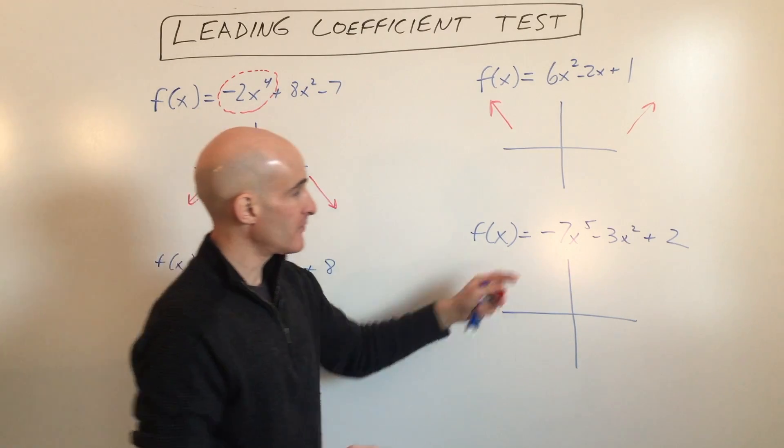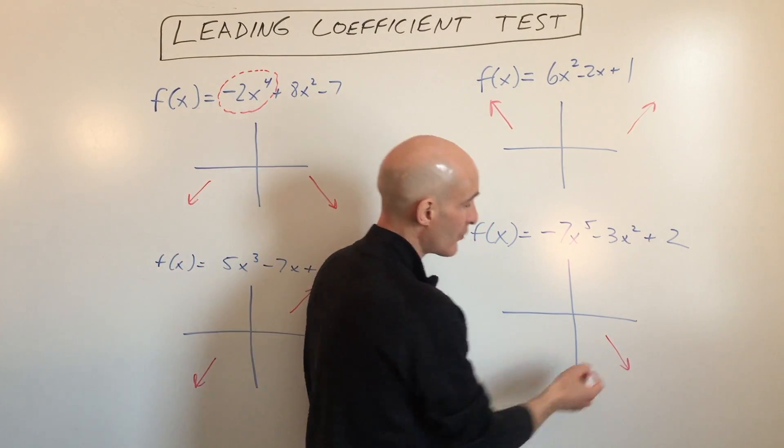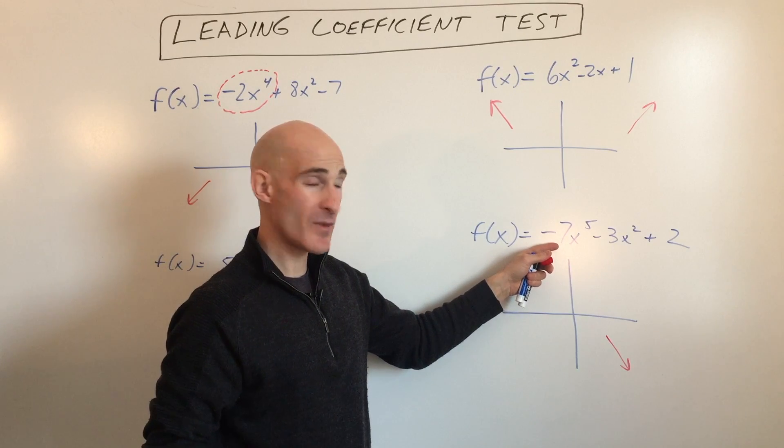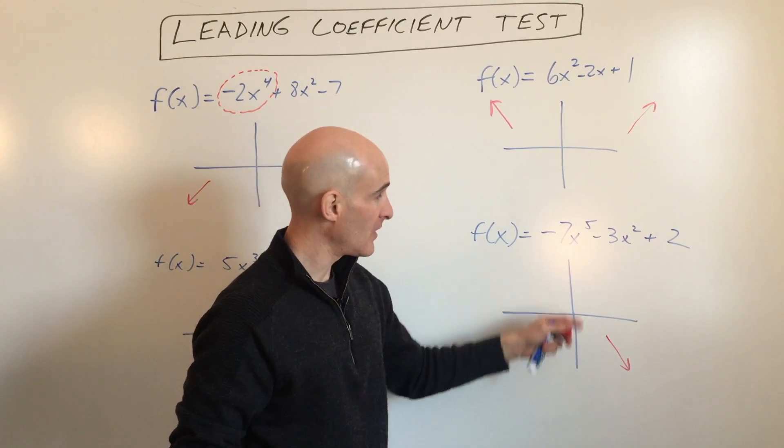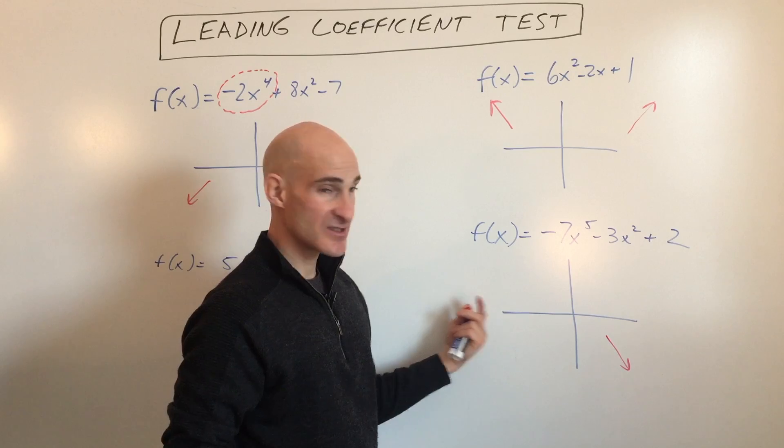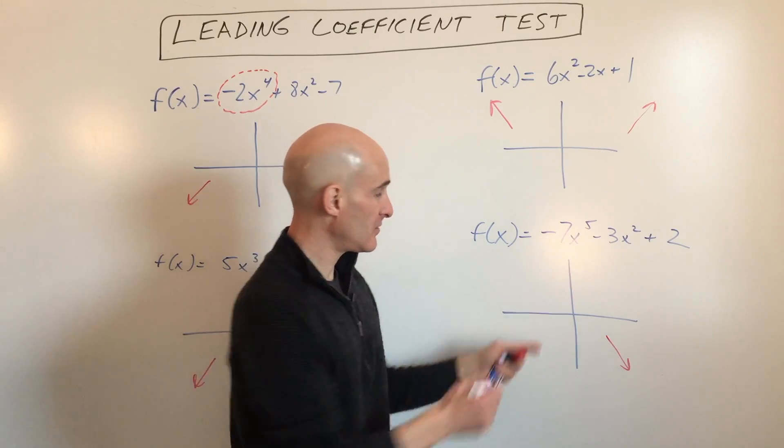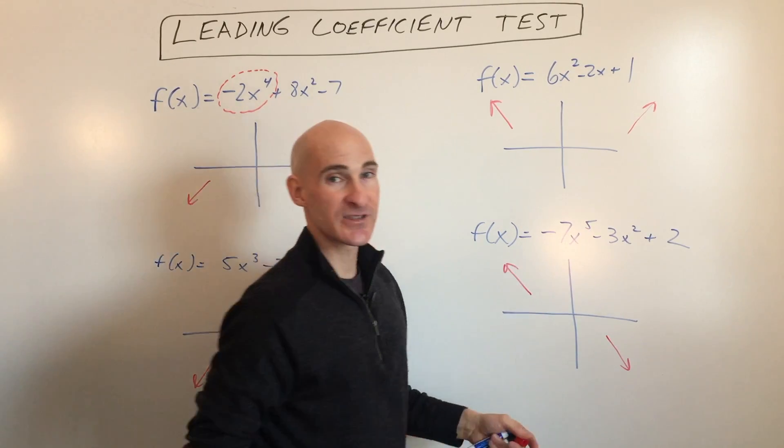And then over here, leading coefficient's negative, so it goes down to the right. The leading coefficient always tells you about the right end behavior, and the degree tells you about what happens to the left. If it's an odd degree, it's going to go the opposite direction of the right end behavior.